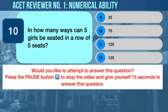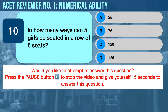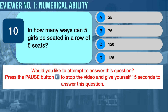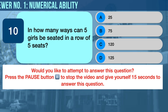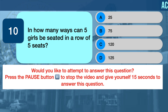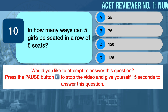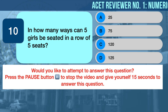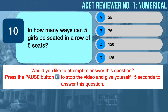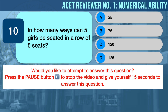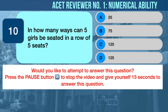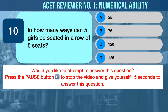Numerical Ability Problem Number Ten: Permutations. In how many ways can five girls be seated in a row of five seats? A) 25, B) 75, C) 120, D) 125.